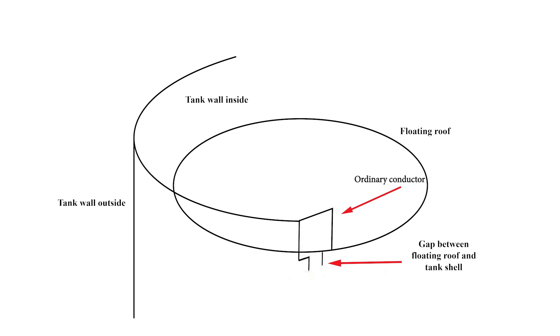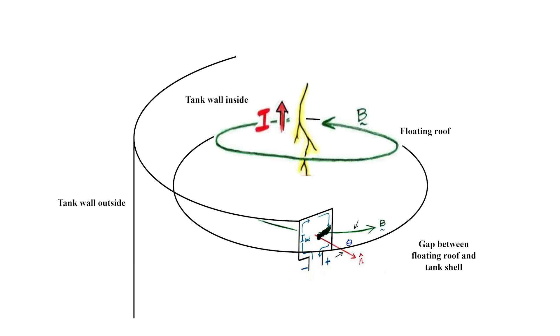This forms a conducting perimeter with a gap, or a magnetic loop antenna that will harness the magnetic field generated by any nearby lightning strikes and direct the energy towards the gap.